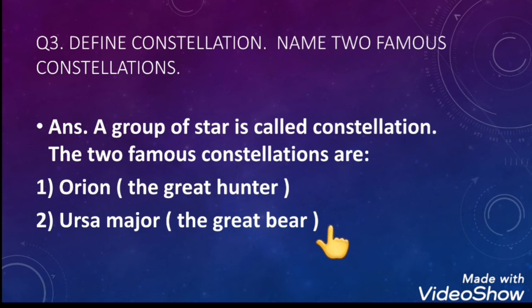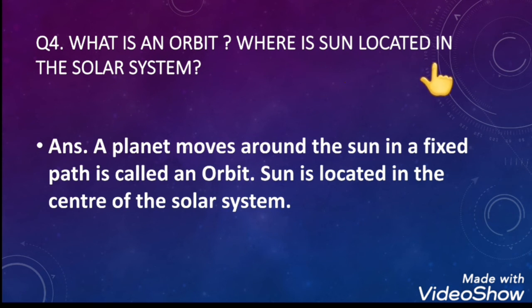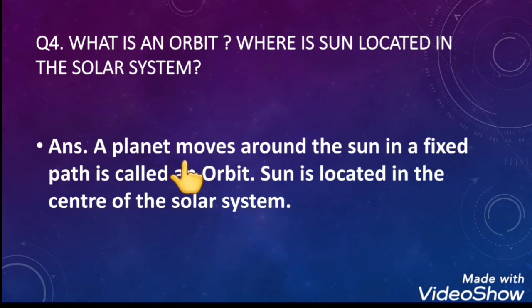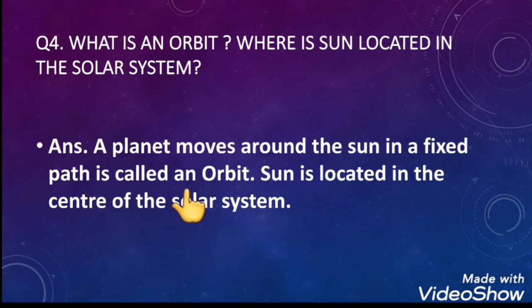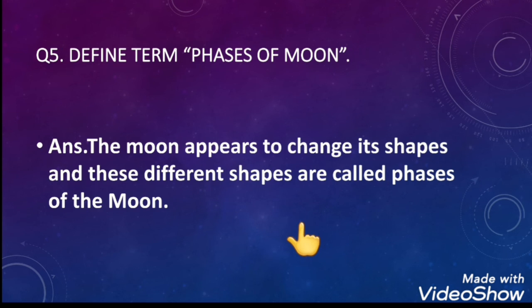Question number four: what is an orbit, and where is the sun located in the solar system? A planet moves around the sun in a fixed path — that path is called an orbit. The sun is located in the center of the solar system.